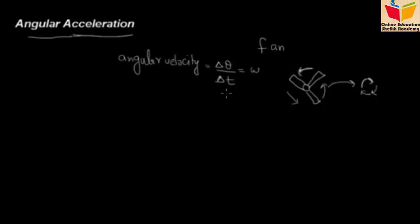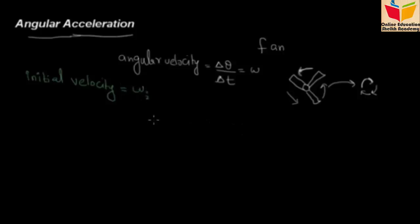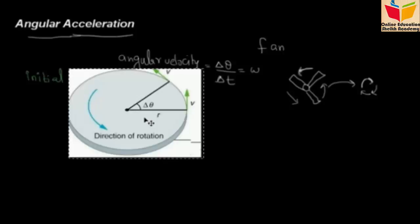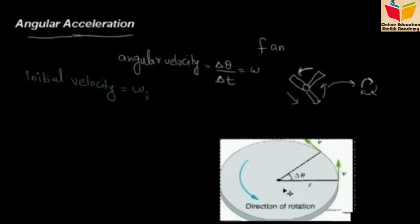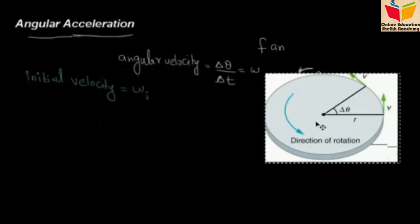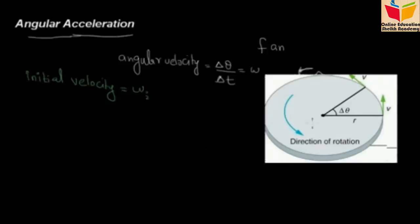Now, what is the mathematical expression? What is the initial velocity? This is the initial velocity — if I take the fan case. This is the initial velocity of the body, which I have denoted as omega i. And I can also show this as a figure. This is the same thing — we have a rotatory body, and it can also be a fan. This is the axis of the center, which is the point along which the body rotates.